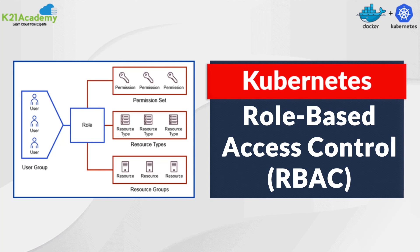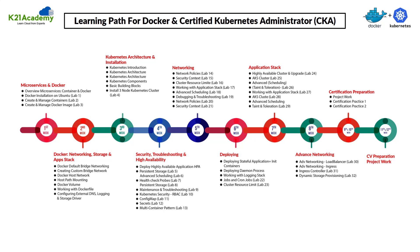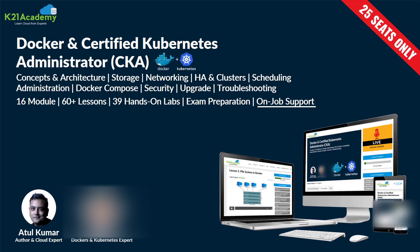Welcome to another episode of the Docker and Kubernetes video series from K21 Academy, where we take you from complete beginner covering microservices and Docker all the way to installing and configuring a Kubernetes cluster, including networking, storage, deployment, ports, scaling using horizontal pod autoscaling, and how to prepare for the CKA or CKS certification exam. We have taken a clip from one of our certification training programs on Docker and Kubernetes for Administrator (CKA), and in this clip our instructor will talk about role-based access control.